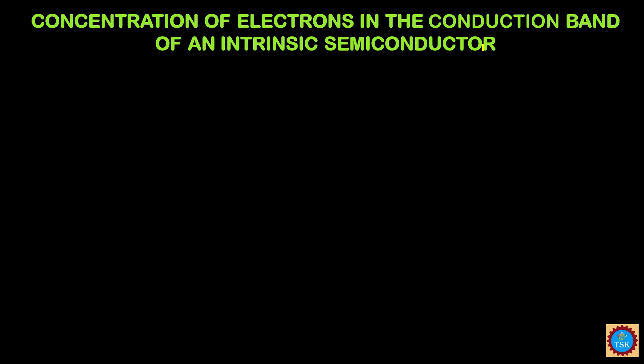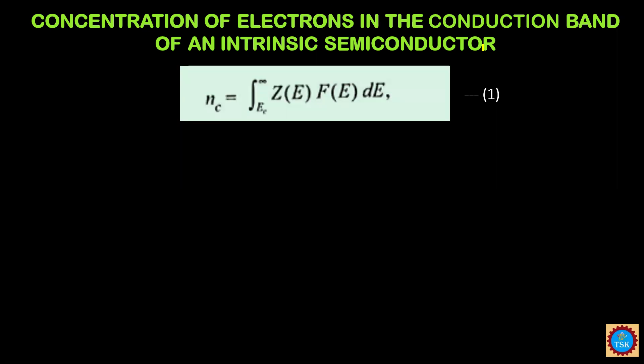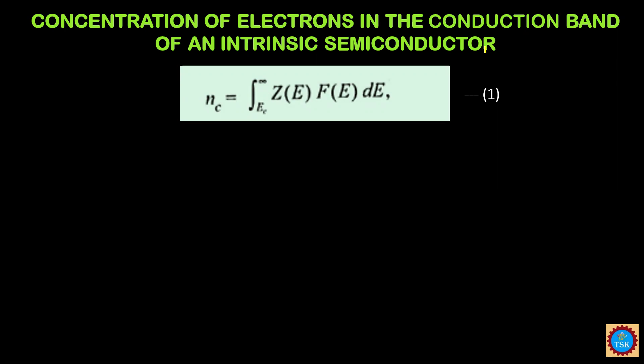For that purpose, we assume that the conduction band is a collection of many energy levels. The lowest energy level of the conduction band is EC and the highest energy level is plus infinity. Therefore, the concentration of charge carriers in the conduction band is represented as NC, equal to the integral from EC to infinity — because the lowest level is EC and the highest is infinity.